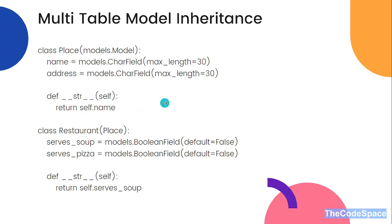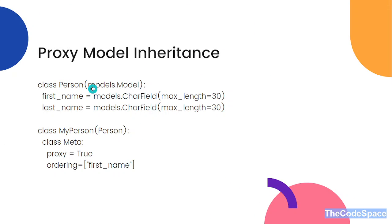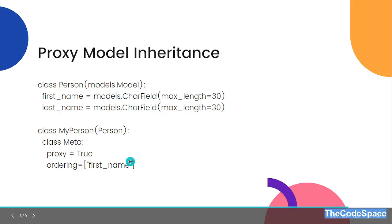I won't add code for multi-table inheritance in VS Code — I hope you understood the difference. Now the third one is proxy model inheritance. In this type of inheritance, we cannot add any extra fields into the child table. The only difference is that in proxy model inheritance we can add extra functionalities — like ordering or default manager settings — into the child table inherited from the base class.